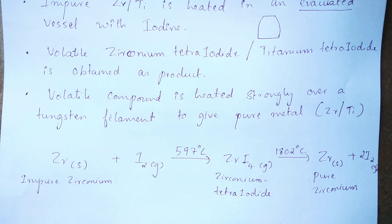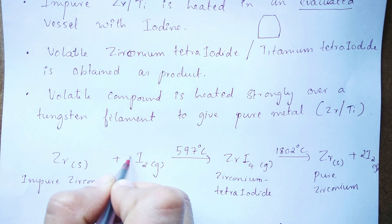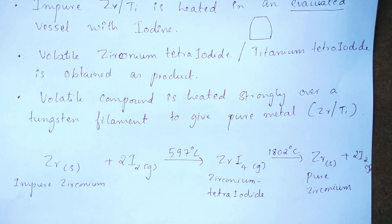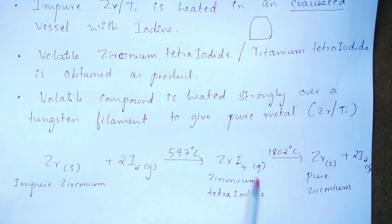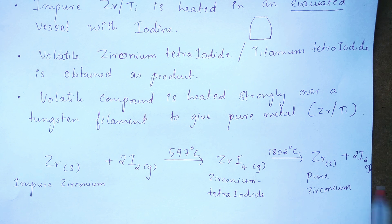Balancing the equation requires putting 2 in front of ZrI₄. This volatile compound is then isolated and heated strongly over a tungsten filament at nearly 1800 degree Celsius, causing it to decompose and produce pure zirconium solid, with iodine gas as the side product.